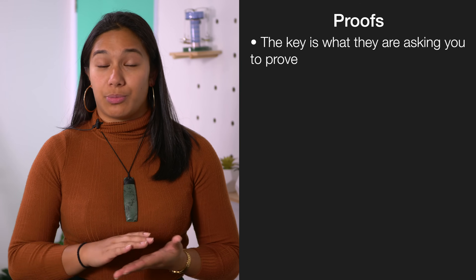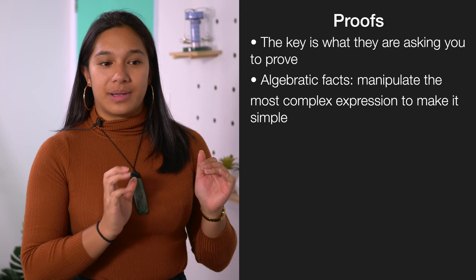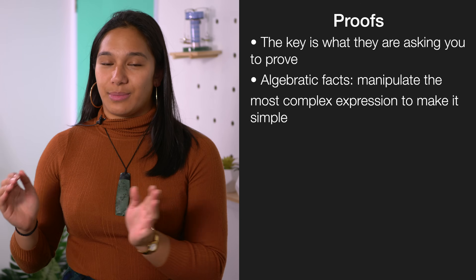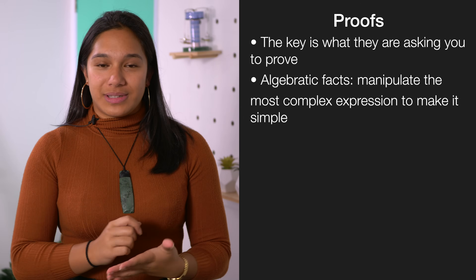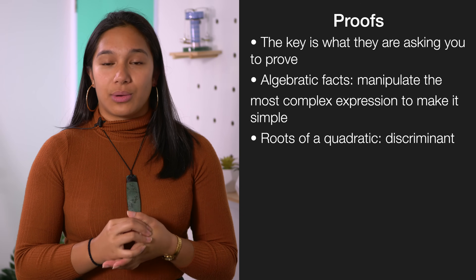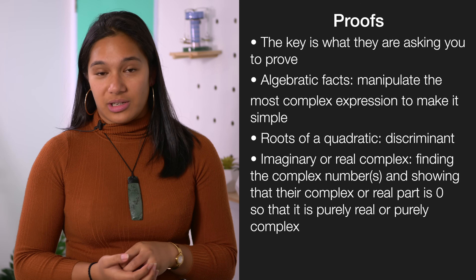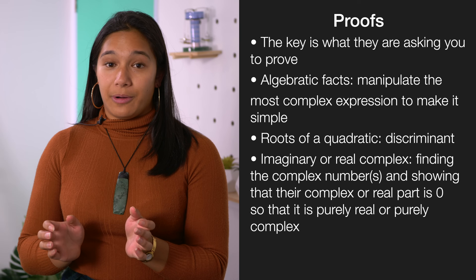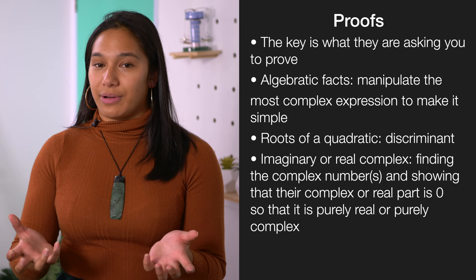Proofs are the bane of every complex number student's existence, but the key is figuring out what they're asking you to prove. If it's algebraic facts, you take the most complex expression and manipulate it to turn it into the simplest expression. If it's involving roots around a quadratic, you'd use the discriminant. If it's involving purely real or imaginary complex numbers, you'd find the complex numbers in the expression, show which part equals zero, and prove whether the expression is purely imaginary or purely real.